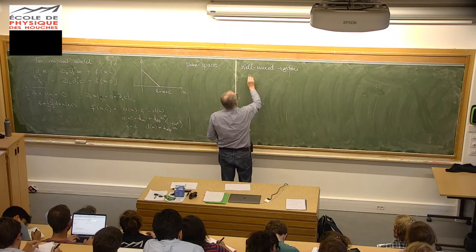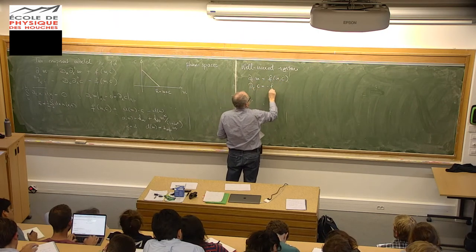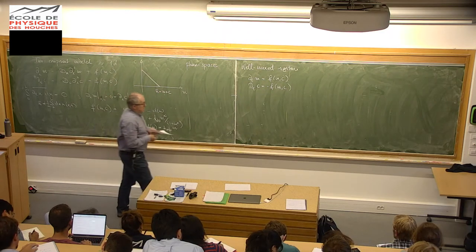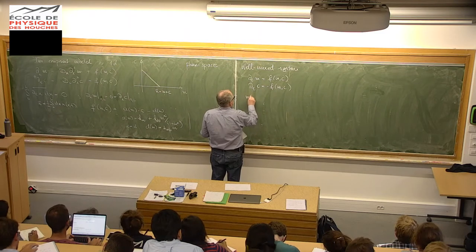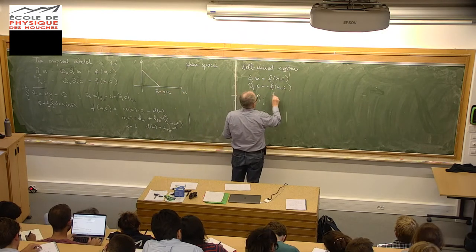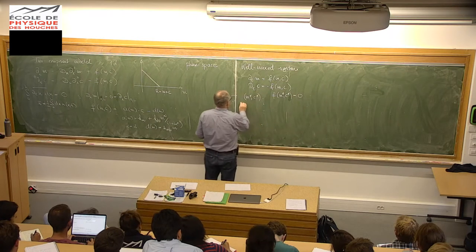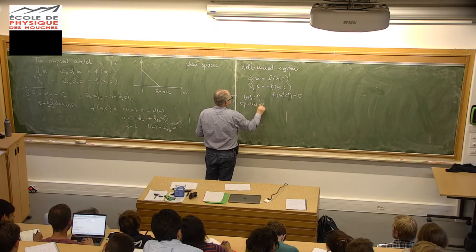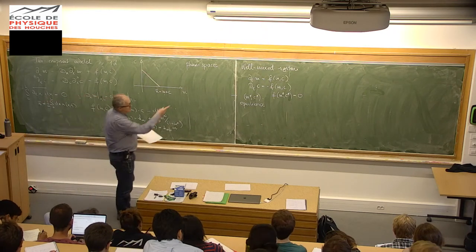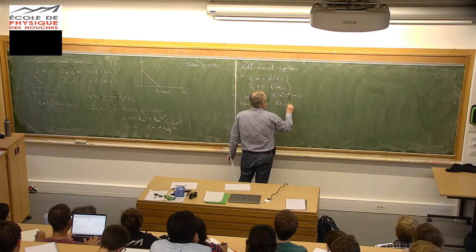Now let's analyze this equation piece by piece. The best way to start is to blend out the diffusion term first and just look at the reaction kinetics alone — a well-mixed system. You may also think of this as just one of those reactors, a small system where diffusion is so fast that mixing happens on a much faster timescale than chemical reactions. For that well-mixed system, the equations are much simpler. Let's ask what the equilibria are: concentrations M star and C star such that the temporal derivatives of M and C vanish, implying F of M star and C star equals zero. Those are the equilibria, determined by the implicit equation F equals zero, which is called the nullcline of the nonlinear problem.